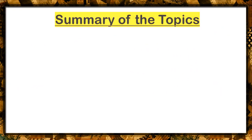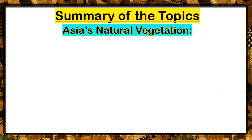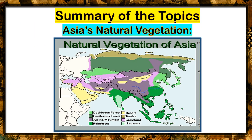For the summary of today's topic — Asia's natural vegetation. This is the map of Asia, and the colors represent the type of vegetation present in each area. We have Deciduous Forest, Coniferous Forest, Alpine Mountain, Rainforest, Desert, Tundra, Grassland, and Blue Savannah.